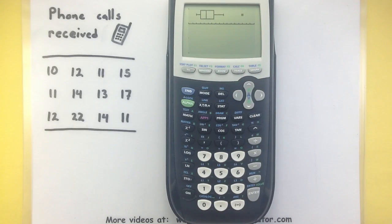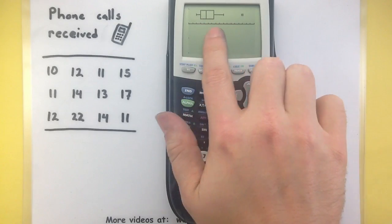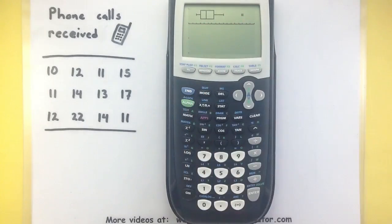And there we are. So we can see the calculator quickly made the box and whisker plot and it has even marked out my outlier at 22. So this is looking pretty good.